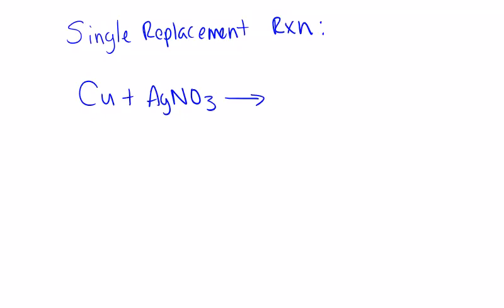Hey guys and welcome to ChemSquad Chemistry. This is Mr. Mullins again today. We are going to be continuing our discussion with Unit 6, talking about reaction types. Today we're going to cover two different types of reactions: single replacement and double replacement. We'll even talk a little bit about neutralization, which is a type of double replacement reaction.